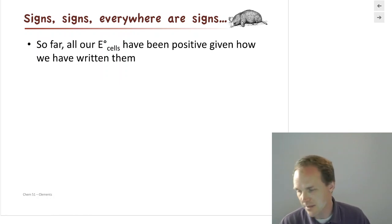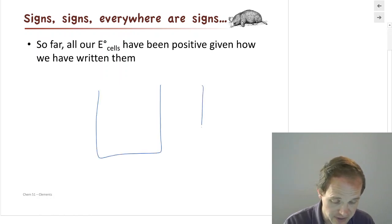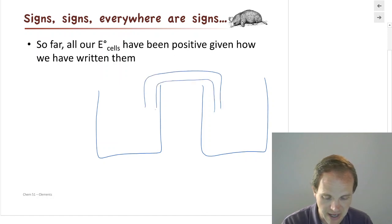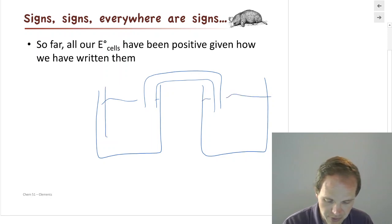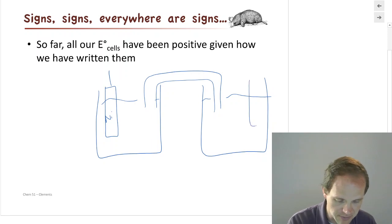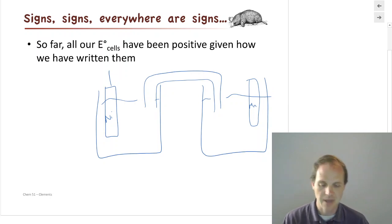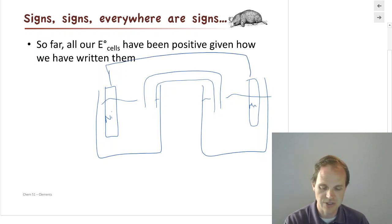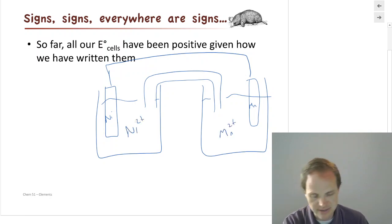So let's say we had a battery. The general convention is to draw the anode on the left and the cathode on the right, but I don't know which one's which yet. So I'm going to draw nickel on one side and manganese on the other side. I'll put Ni²⁺ in one half-cell and Mn²⁺ in the other.